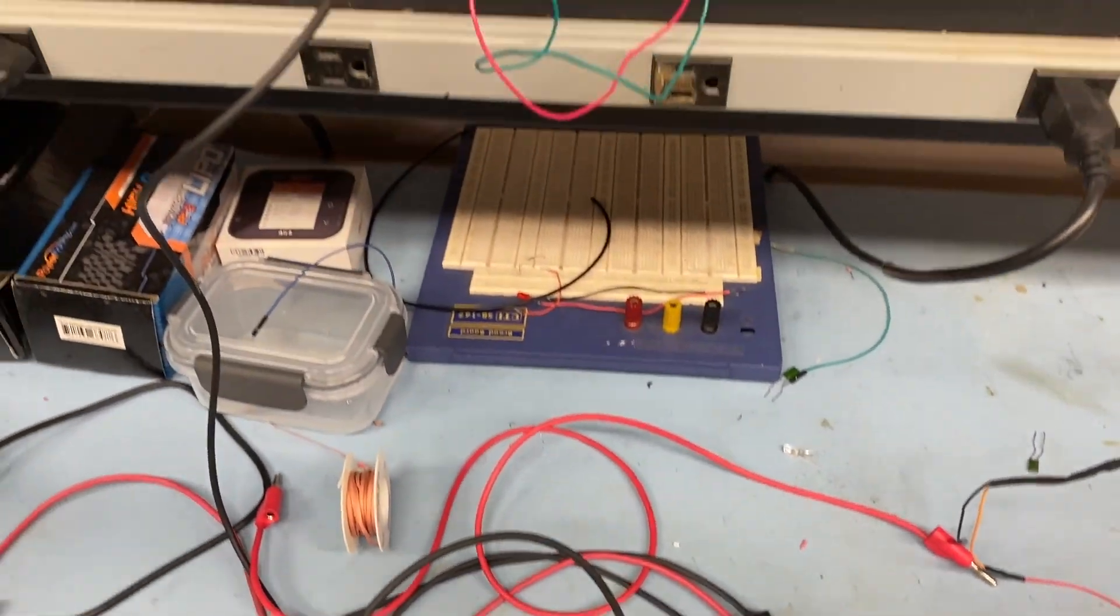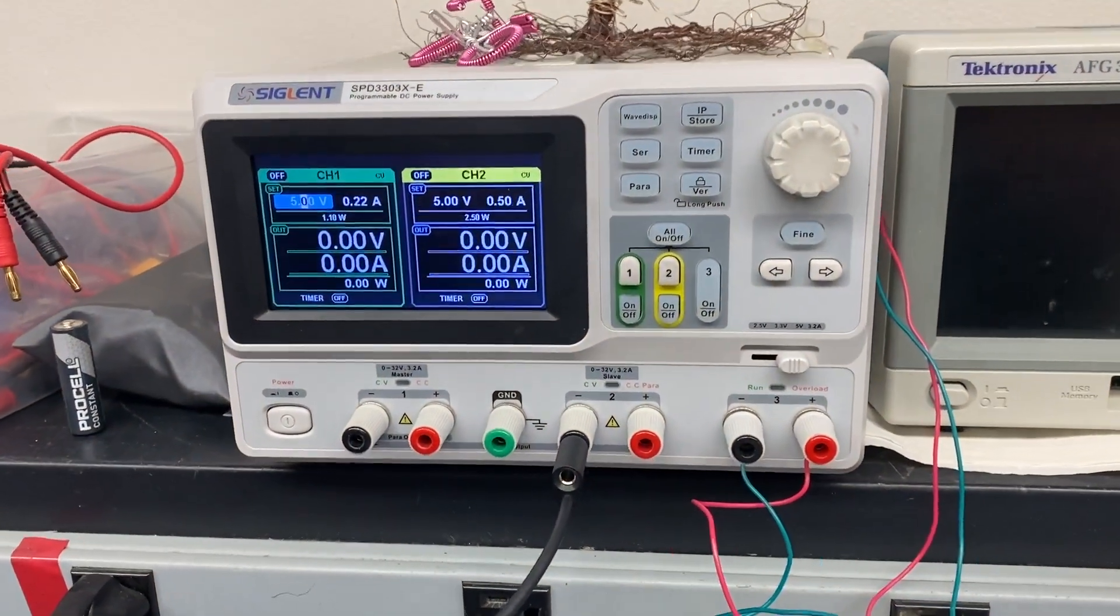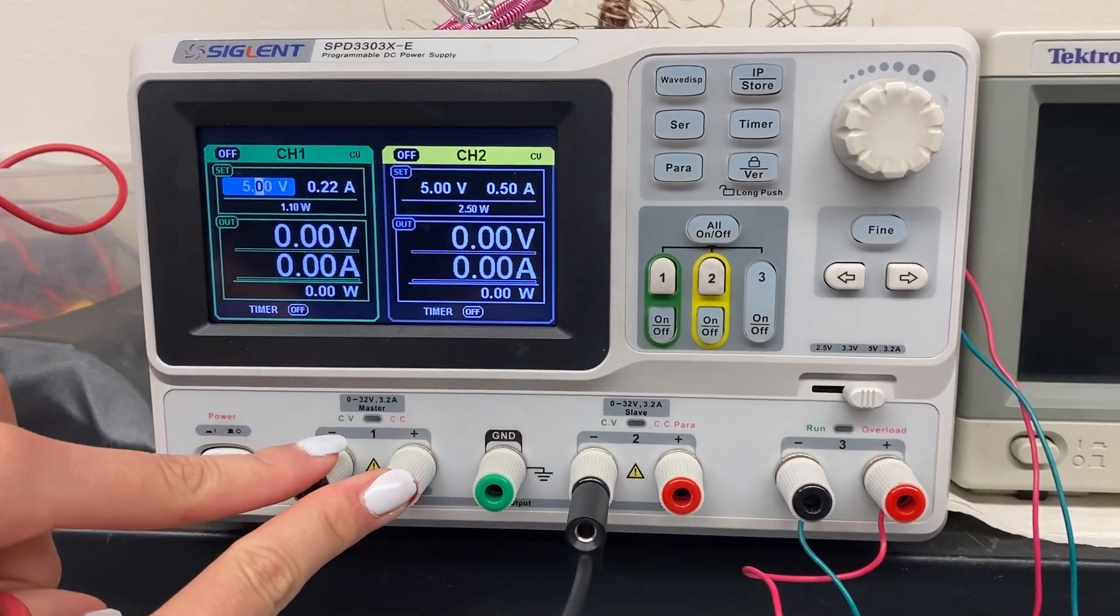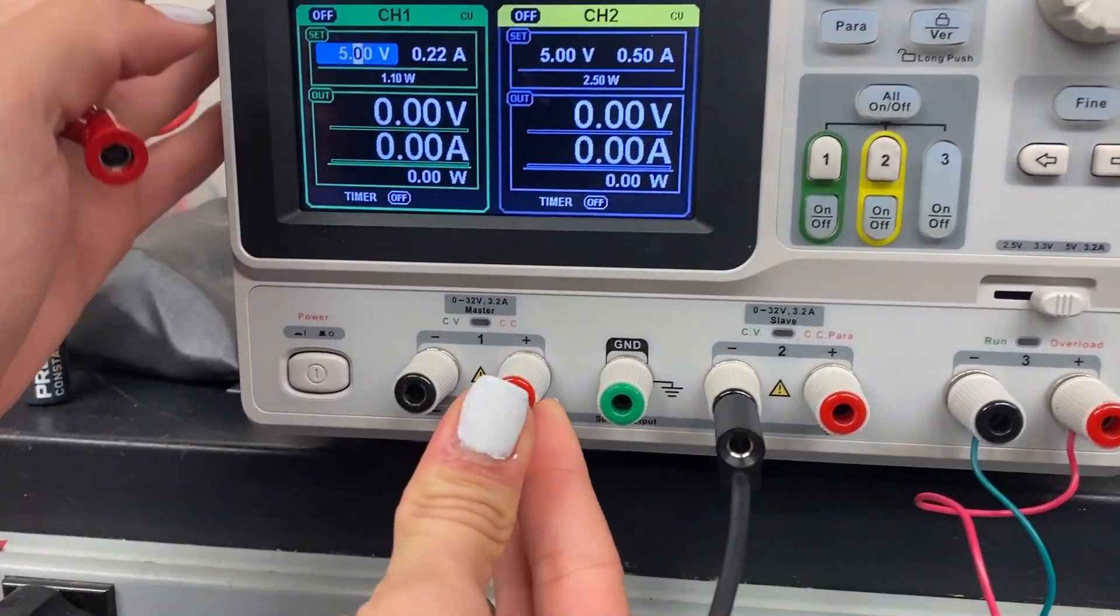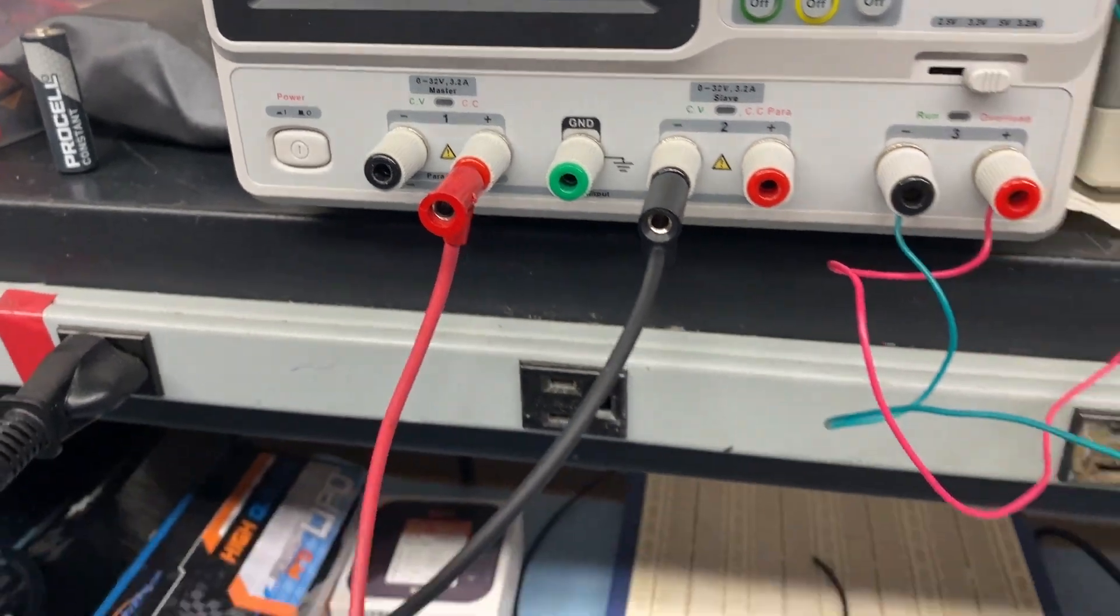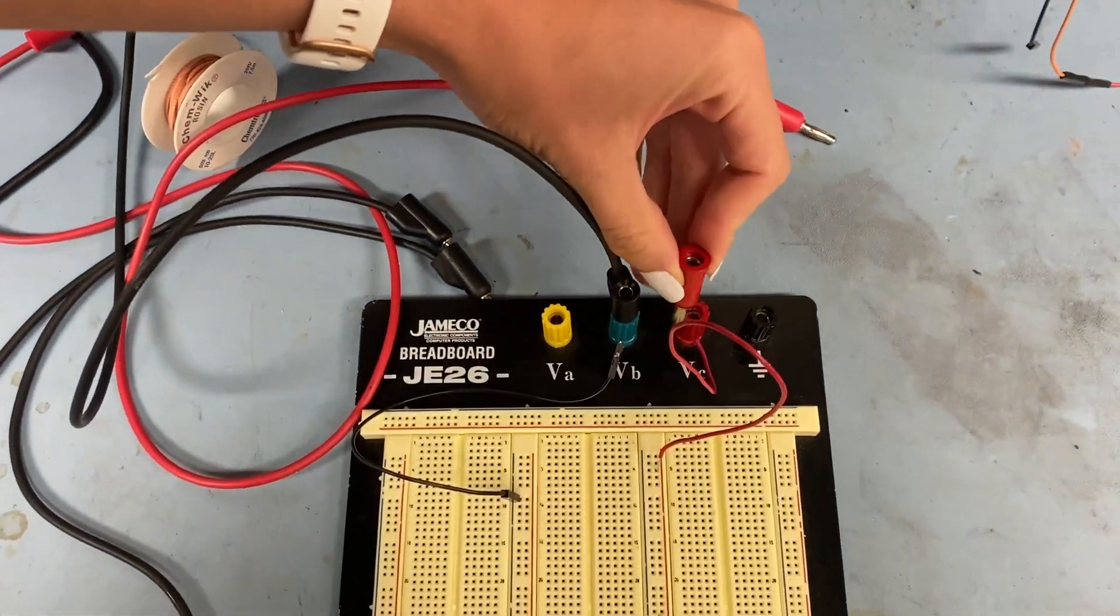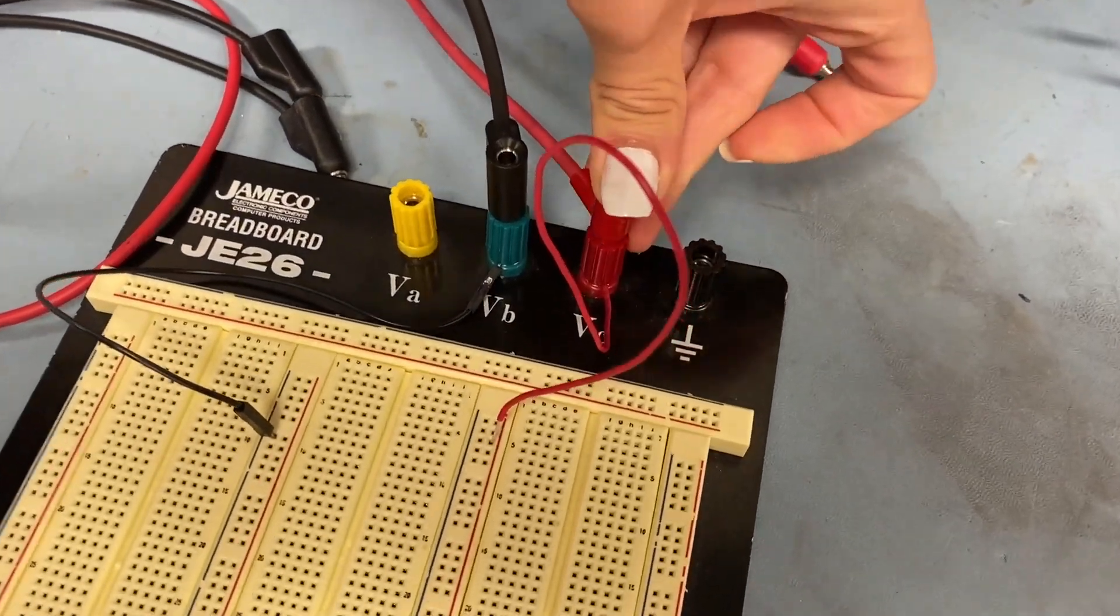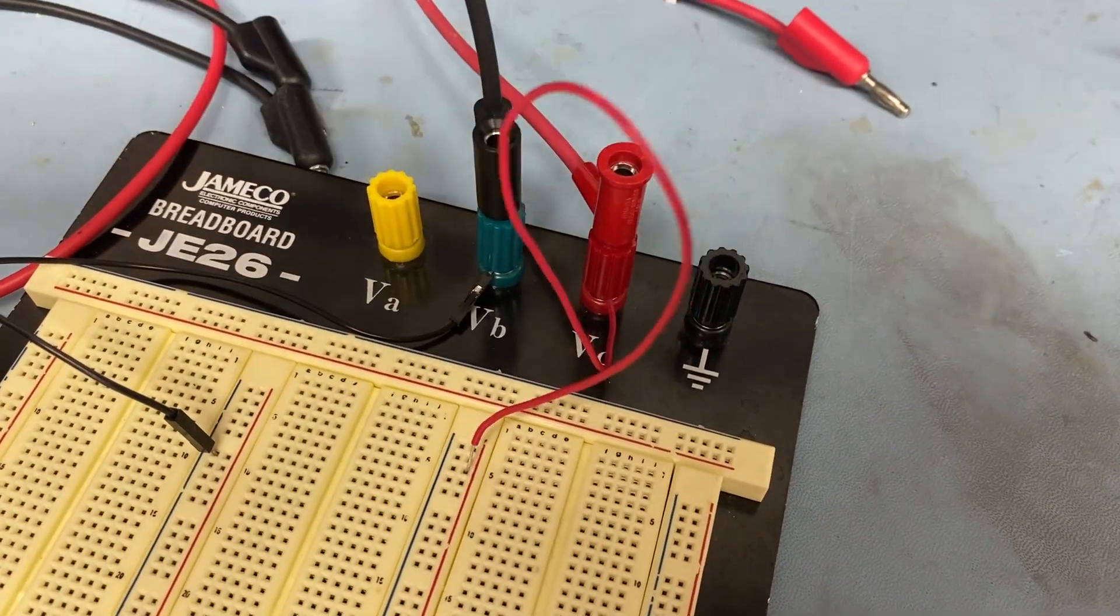Now I connect my positive 5 volts which will be channel 1 in this case. So my positive terminal here, that's going to be connected also to my breadboard and that is going to be the positive 5 volts. So here I connect it and this is going to be 5 volts.